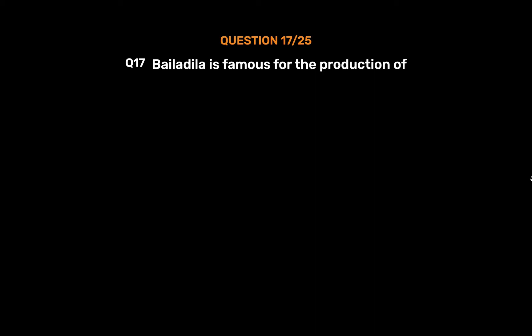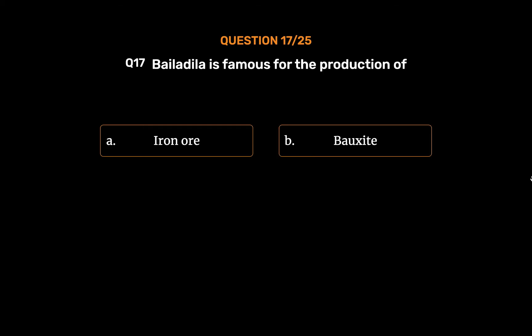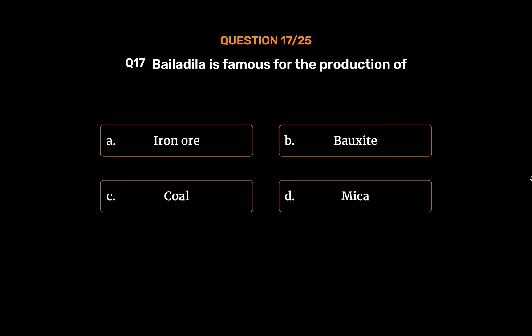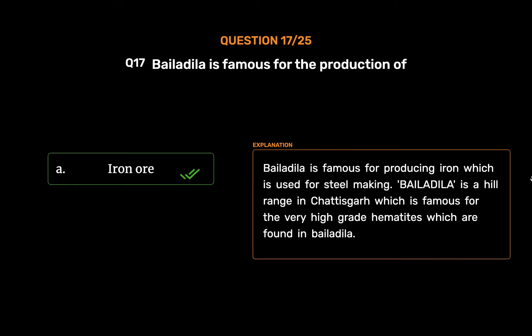Question No. 17: Bailadila is famous for the production of — Option A: Iron Ore. Option B: Bauxite. Option C: Coal. Option D: Mica. The correct answer is Option A: Iron Ore. Bailadila is famous for producing iron which is used for steel making. Bailadila is a hill range in Chhattisgarh famous for very high-grade hematite iron ore found there.